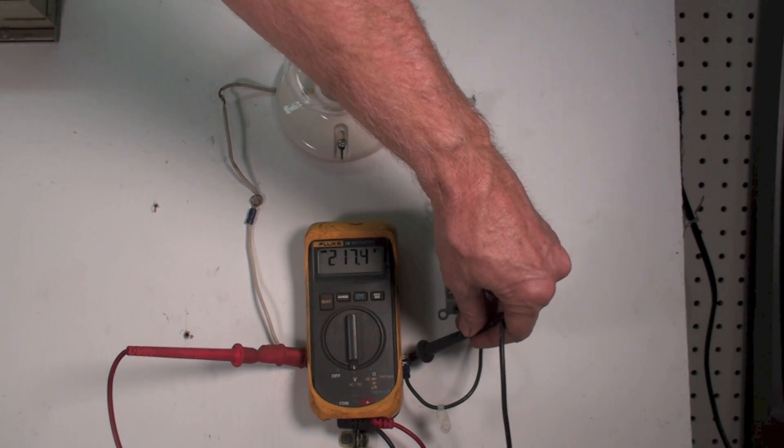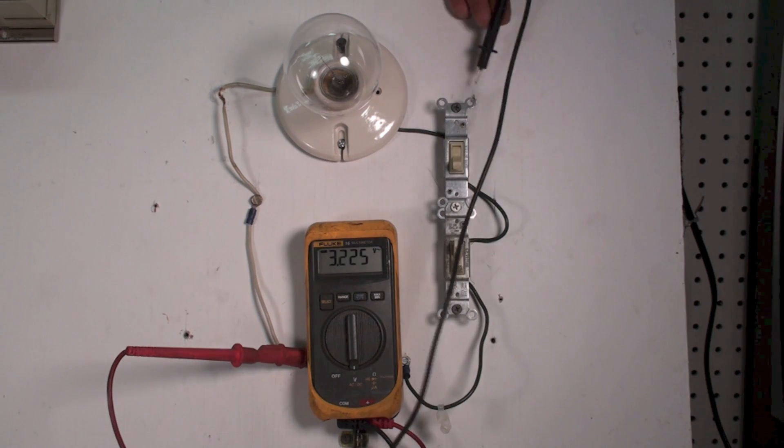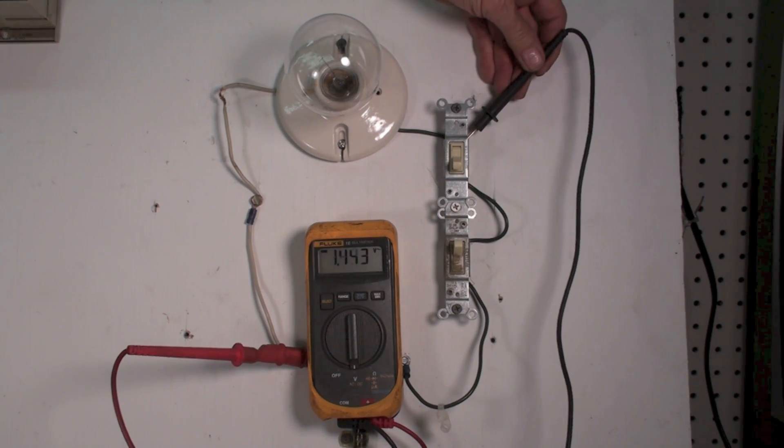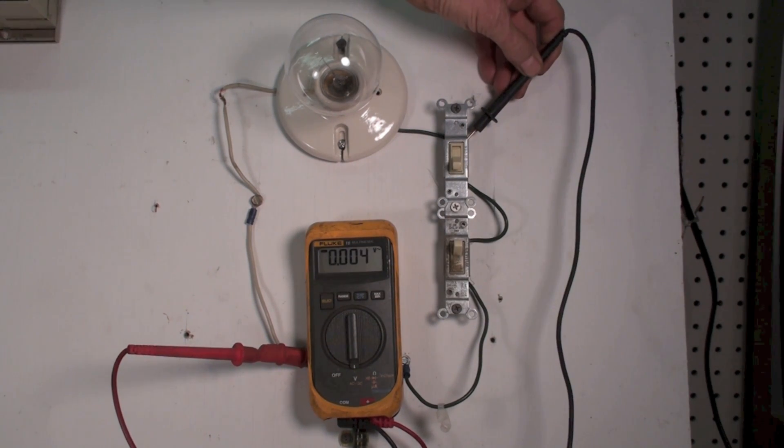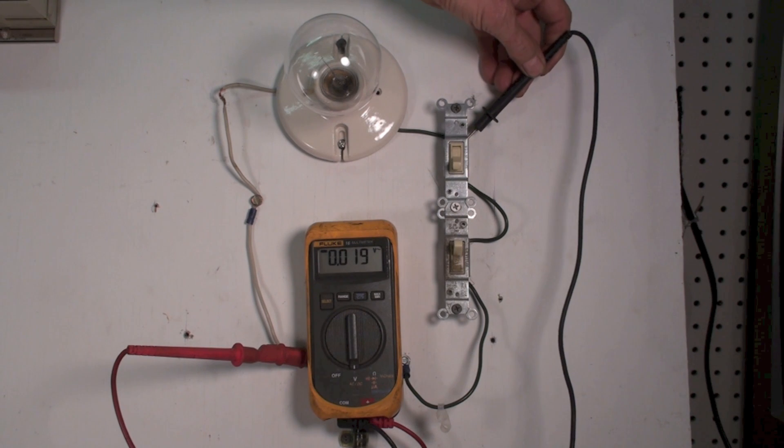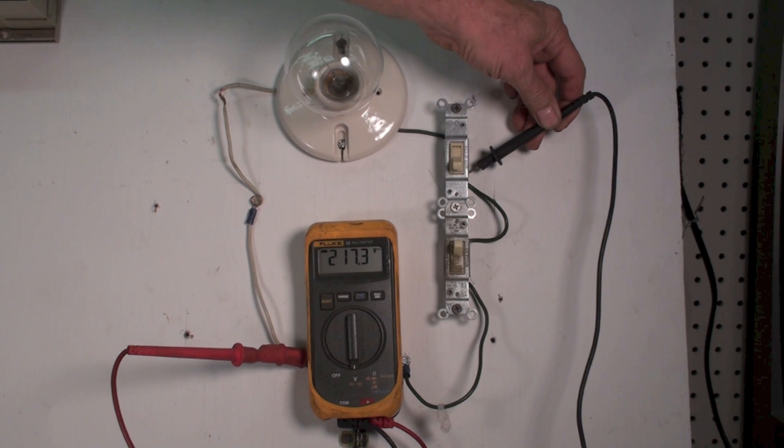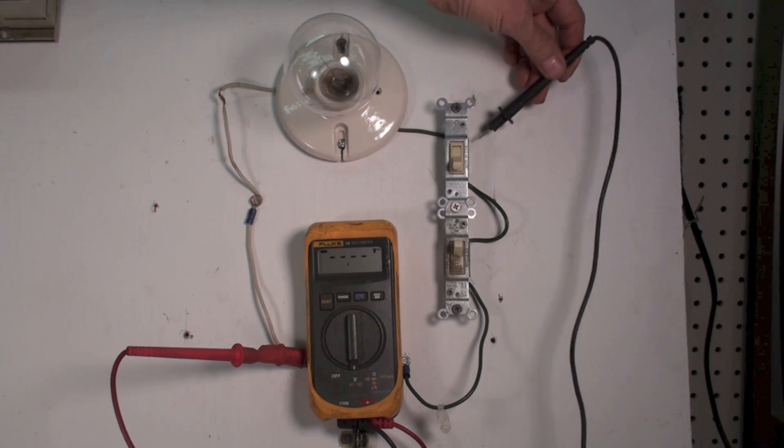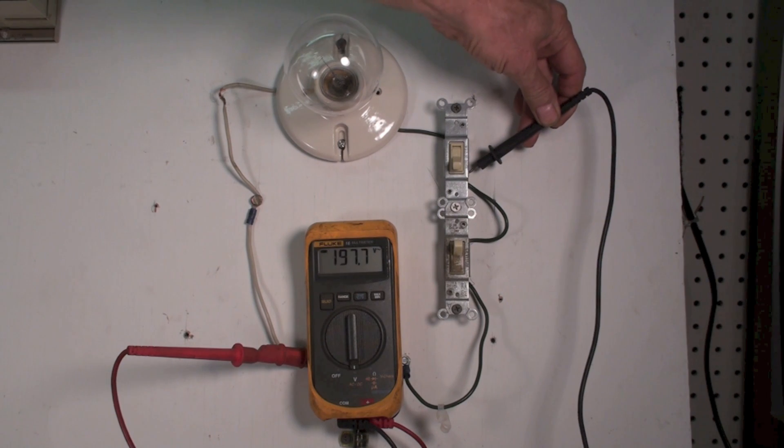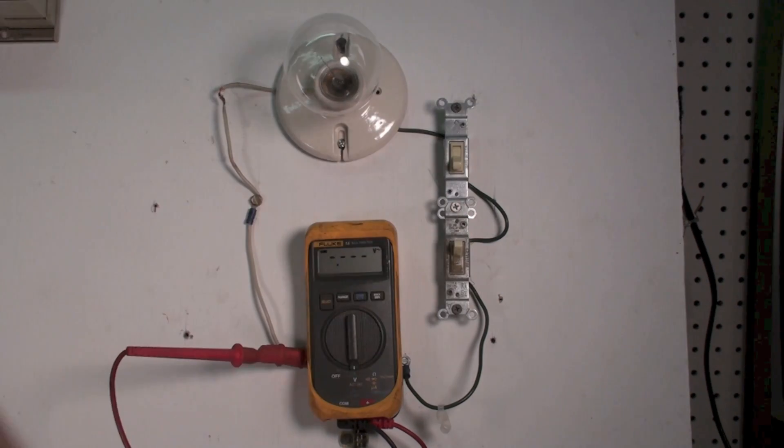I have power. I go across the load, I don't show any power. I go here and I show 240 volt power. So I know the switch I just bypassed is a switch that is off. That's how that actually works.